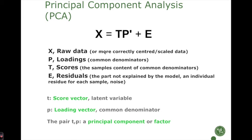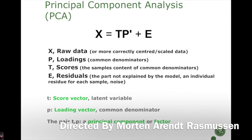Notation-wise: X is the raw data matrix, P is the loadings — which we refer to as common denominators — and T is the scores, which visualize the multivariate distribution of the samples. E is the residuals. Variance explained refers to how much of the variance from X is distributed between E and TP. A lowercase t is called a score vector, lowercase p a loading vector, and the pair TP together forms a principal component.